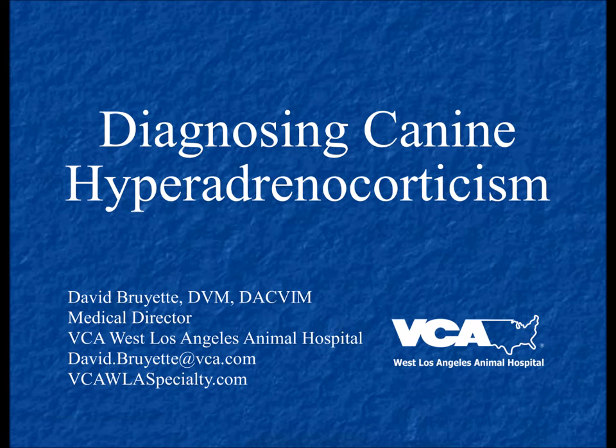If we look at all the causes of hypothyroidism in dogs — thyroiditis, atrophy, congenital, tumors, secondary, or tertiary — the first two, lymphocytic thyroiditis and idiopathic atrophy, probably account for more than 90% of what we see. The other things occur under very unusual circumstances and clinically would be very hard to differentiate. These dogs will definitely show signs of hypothyroidism because their thyroid function is compromised.